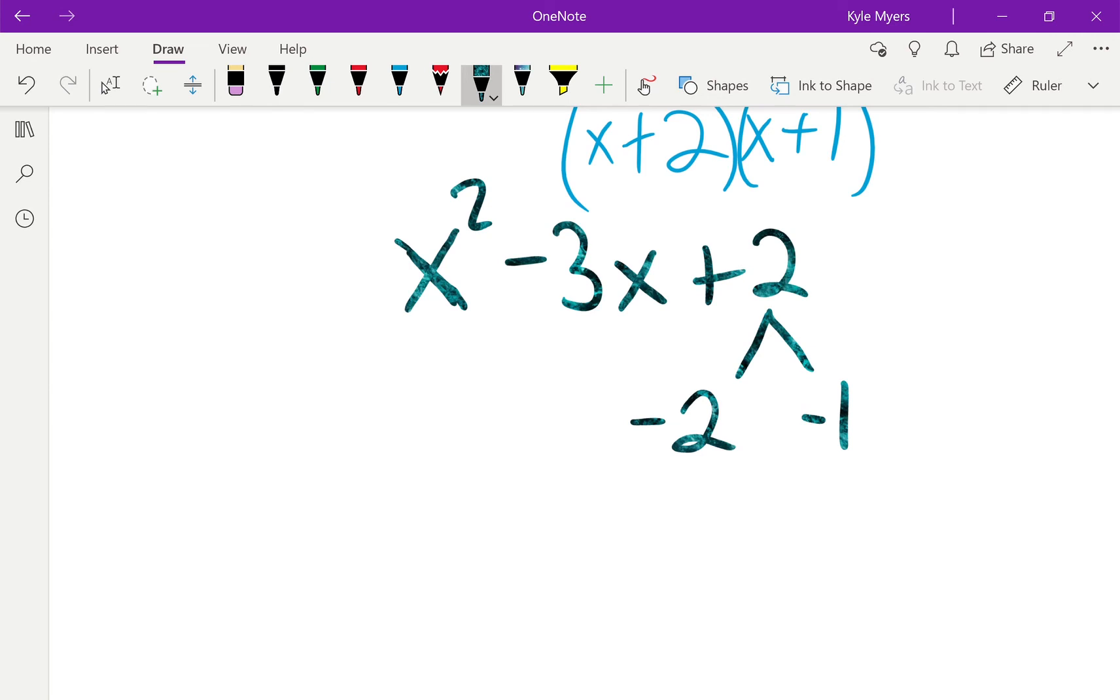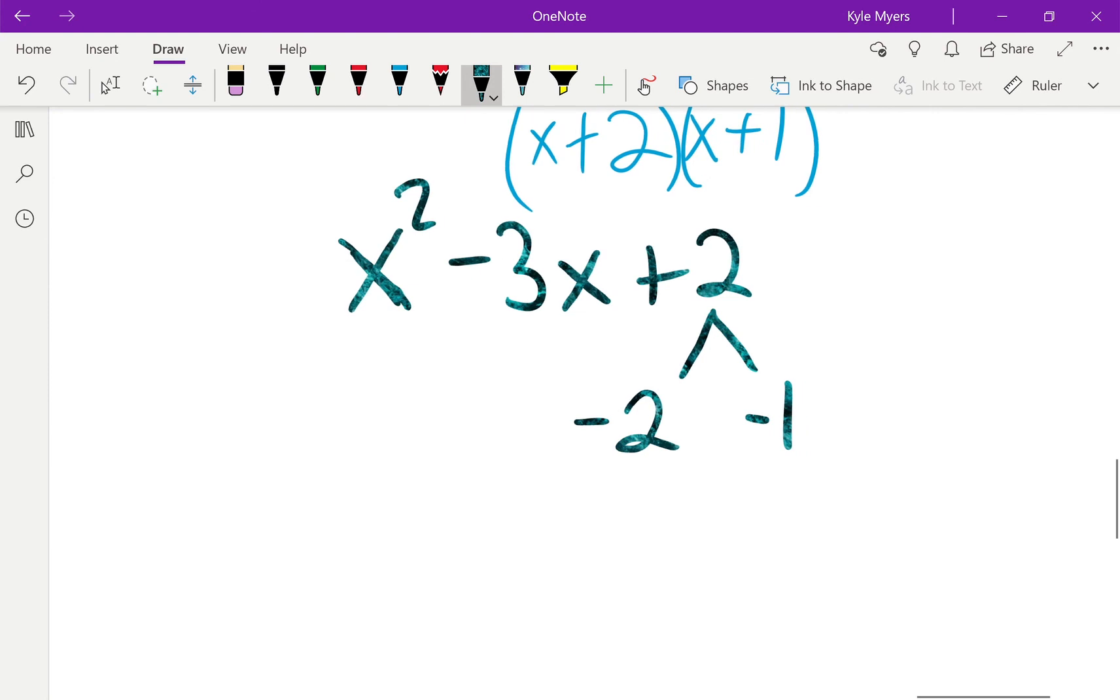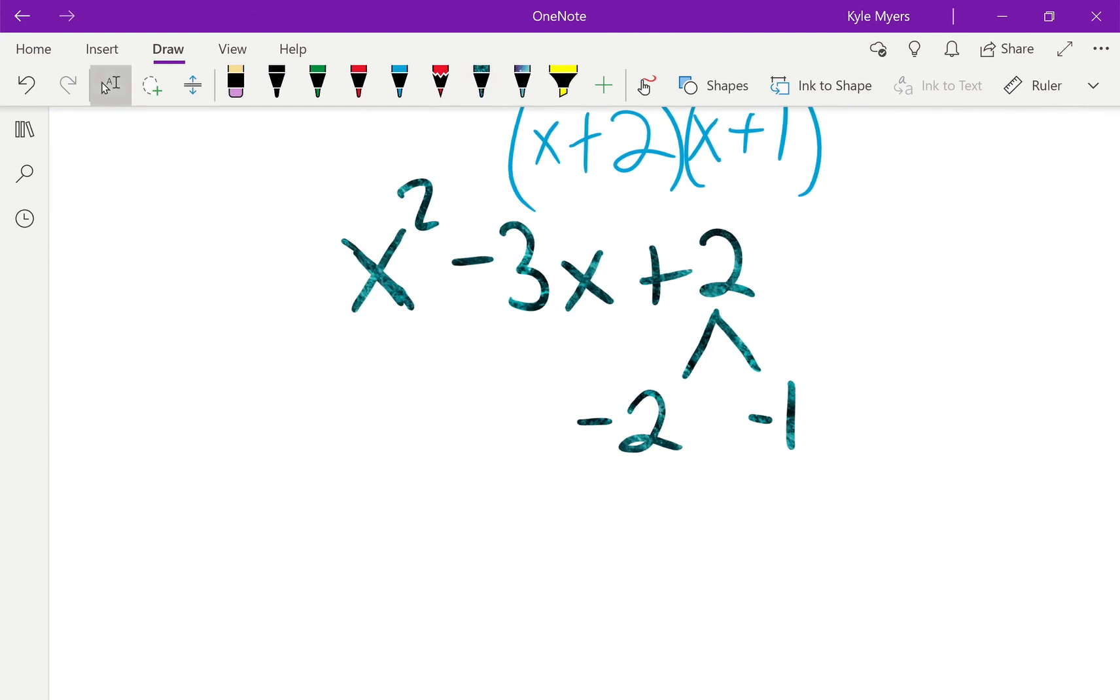Negative 2 minus 1 is negative 3 when I add, right? Because this is negative 2 plus negative 1, or just negative 2 minus 1, however you want to look at it, whatever strategy you use for your integers is fine with me. But negative 2 times negative 1 is positive 2. So this all checks out here. Throw some x's around it, and call it a day.